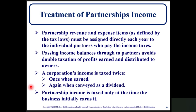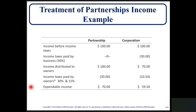Treatment of partnership income: partnership revenue and expense items must be assigned directly each year to individual partners who pay the income taxes. Passing income balances through to partners avoids double taxation of profits earned and distributed to owners. A corporation's income is taxed twice — once when it's earned and again when conveyed as a dividend. Partnership income is taxed only at the time the business initially earns it, so a partnership has inherent tax advantages over a corporation.